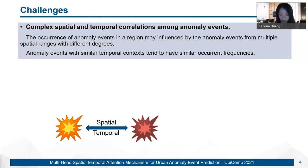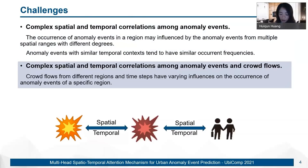There are three aspects of challenge in the problem of citywide anomaly event distribution prediction. First, there are complex spatial and temporal correlations among anomaly events. The occurrence of anomaly events in a region may be influenced by abnormal events from multiple spatial ranges to different degrees. Anomaly events with similar temporal contexts tend to have similar occurrence frequencies. Second, the movement of crowd flows will also impact the occurrence of anomaly events in spatial and temporal dimensions. Last but not least, the effectiveness of the anomaly events and crowd flow data will significantly degrade the prediction accuracy.